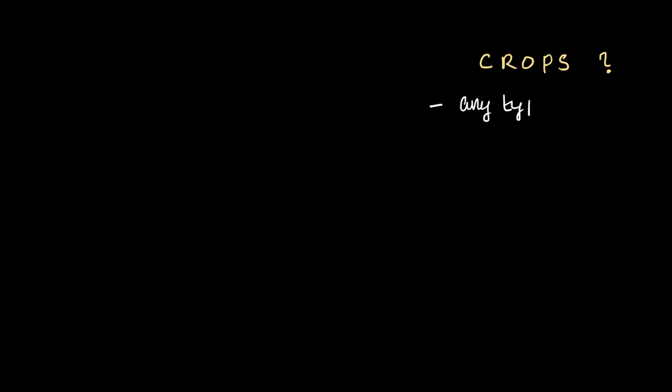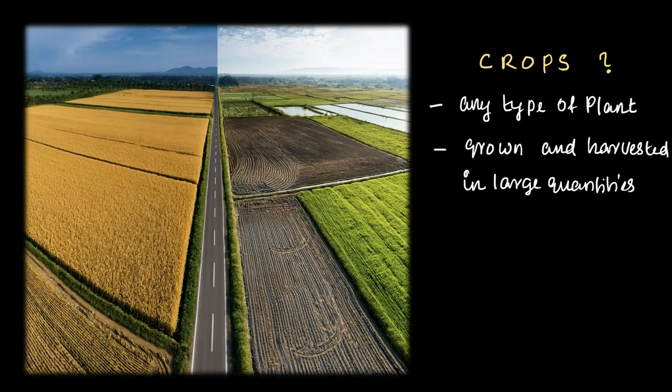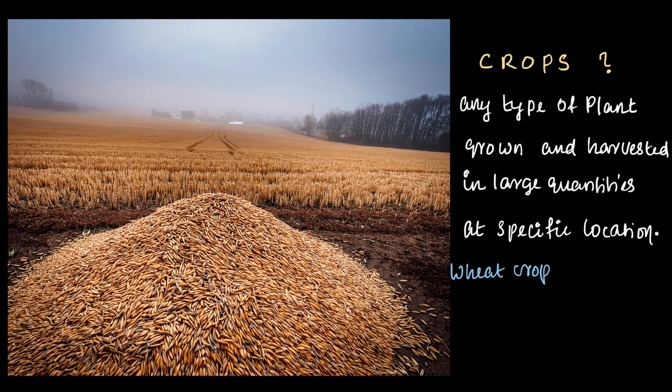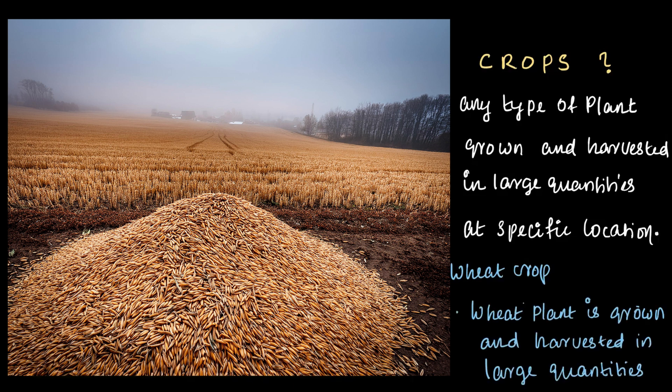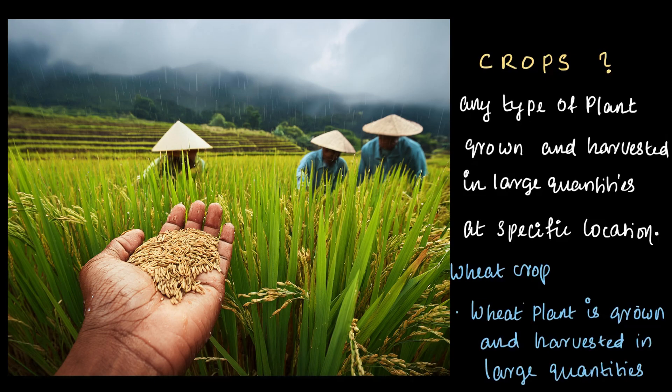Now, I've been mentioning the word 'crop' a couple of times. What do we mean by a crop? You already know what vegetables are — you're familiar with wheat and rice — but what does 'crop' mean? Simply put, a crop is any type of plant that is grown and harvested in large quantities at a specific location. For example, when I talk about wheat crop, it means wheat as a plant is grown and harvested in large quantities.